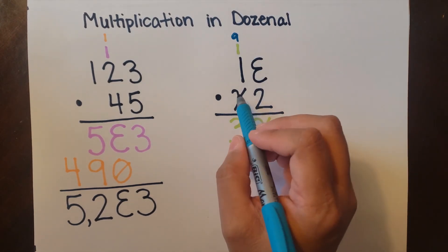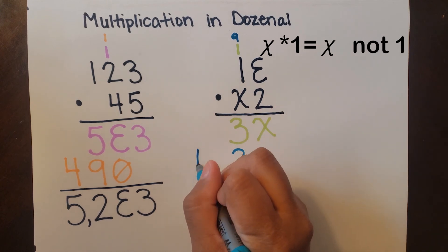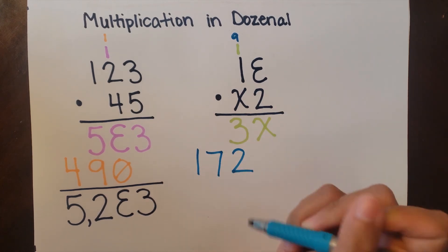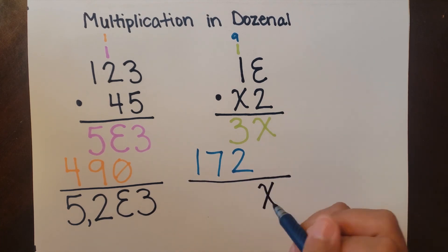Anything times 1 is itself, so deck times 1 is deck, and we have to add 9 to it. Deck plus 9 is 1 doe 7. And our final answer is 1 mow 7 grow 5 doe deck.